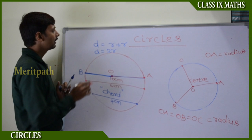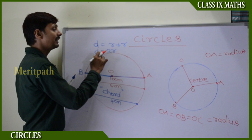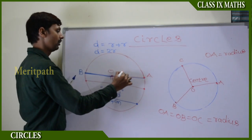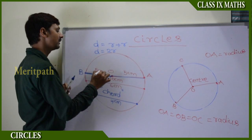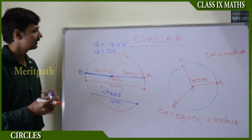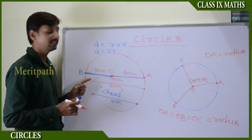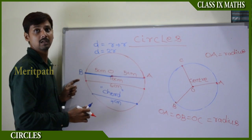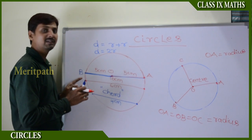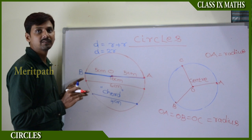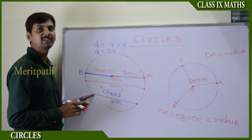We have discussed the diameter of the circle — it is two times the radius. If OA is five centimeters and OB is five centimeters, then AB equals the diameter of the circle. So AB is a chord of the circle, and the diameter is also called a chord of the circle. But every chord is not called a diameter of the circle.